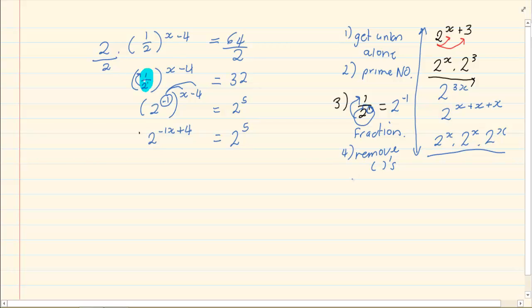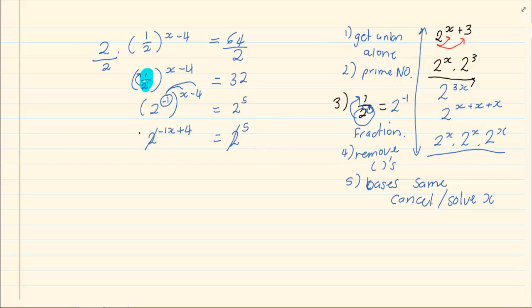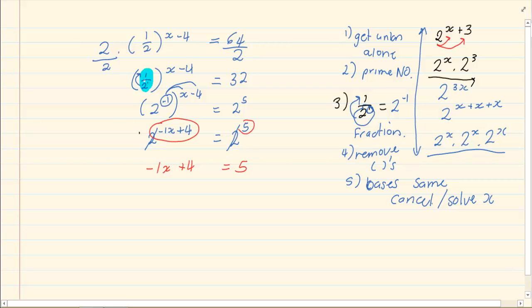Once the bases are the same, then we can cancel the base. And you solve as you would solve a normal algebraic expression of solve for x. In this case I would cancel the bases. And I am left with minus 1x plus 4 is equal to 5. So I am making the exponents equal to each other.